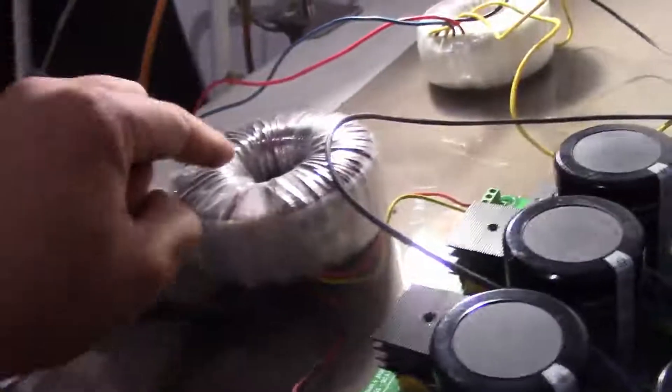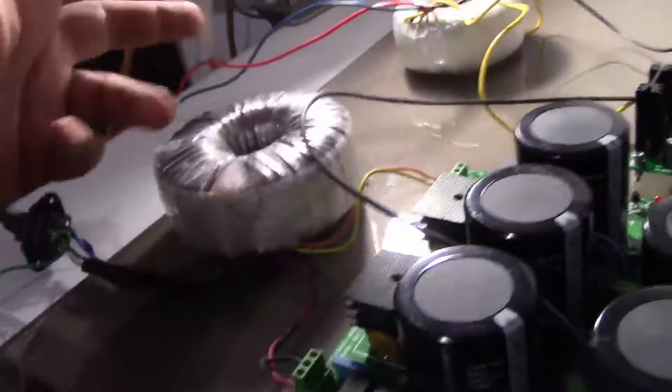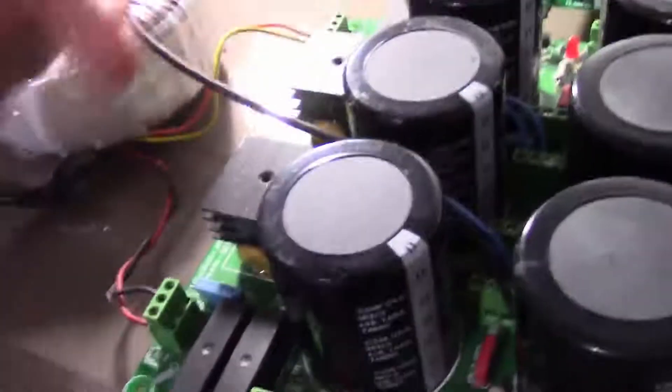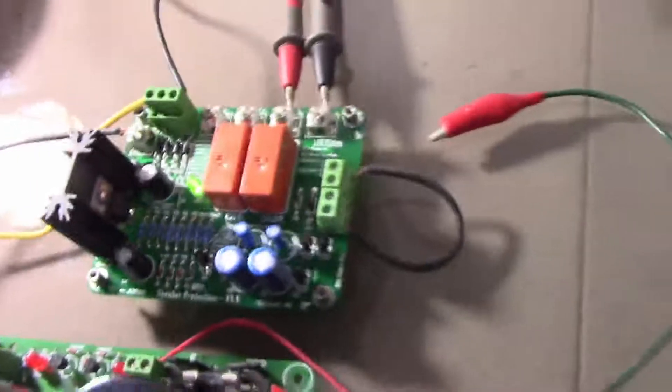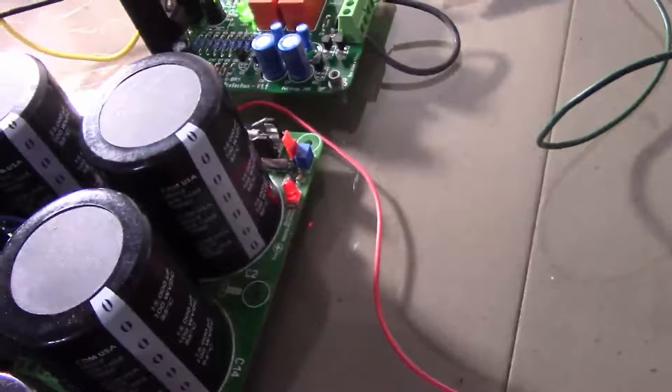I'm using this toroidal transformer that supplies 35 volt AC, but I'm using two bridge rectifiers and I have the ground connected to the center. So that's the ground and it's working really, really good. I'm really surprised.